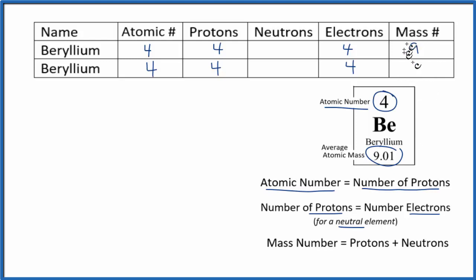If we do that, we have a mass number of nine. The number of protons, which is four, we know that, plus the neutrons equals nine.